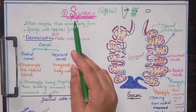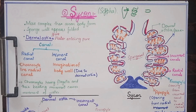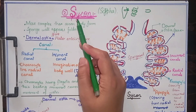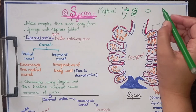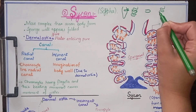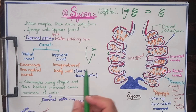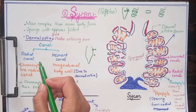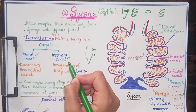Students, today we are going to talk about Sycon body form. In a previous lesson we studied Ascon body form. Sycon is basically a modified form of Ascon. In Sycon body form, the body wall invaginates and forms a folded structure. There are two types of canals present in Sycon body form: one is the radial canal and the second is the incurrent canal.